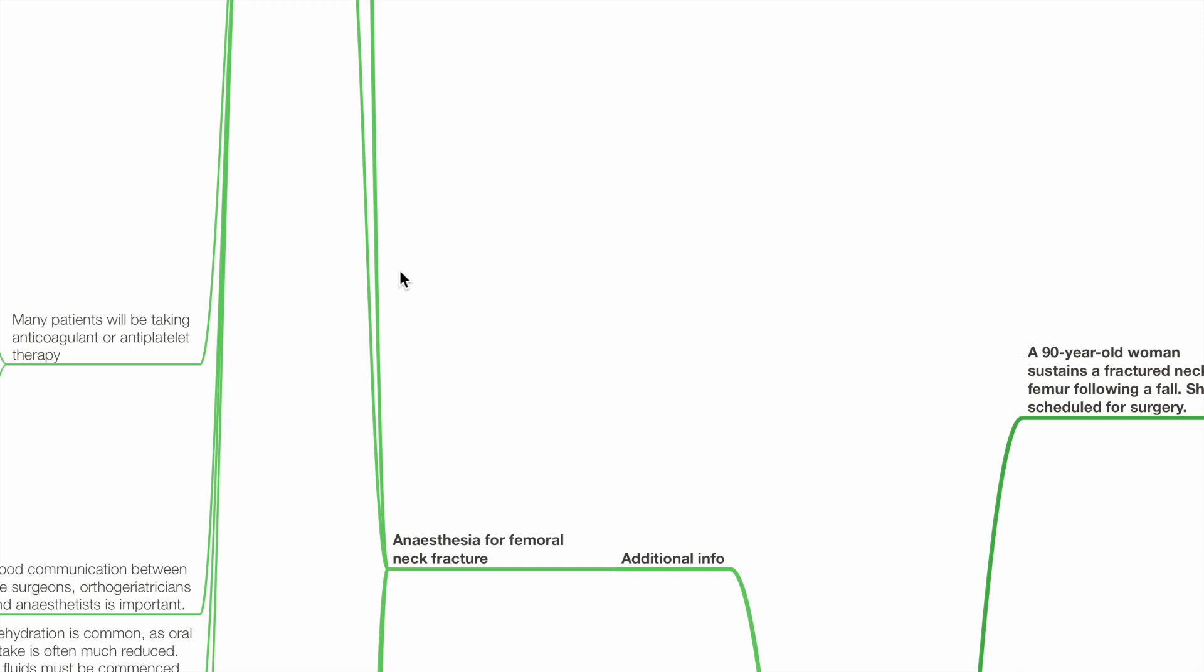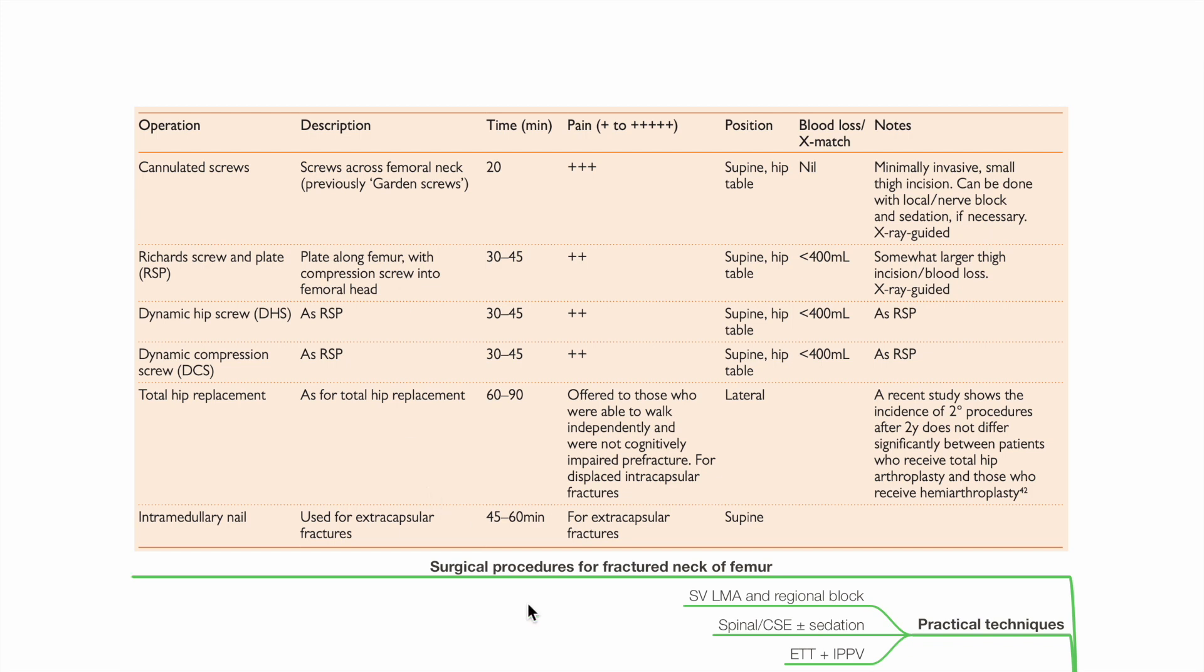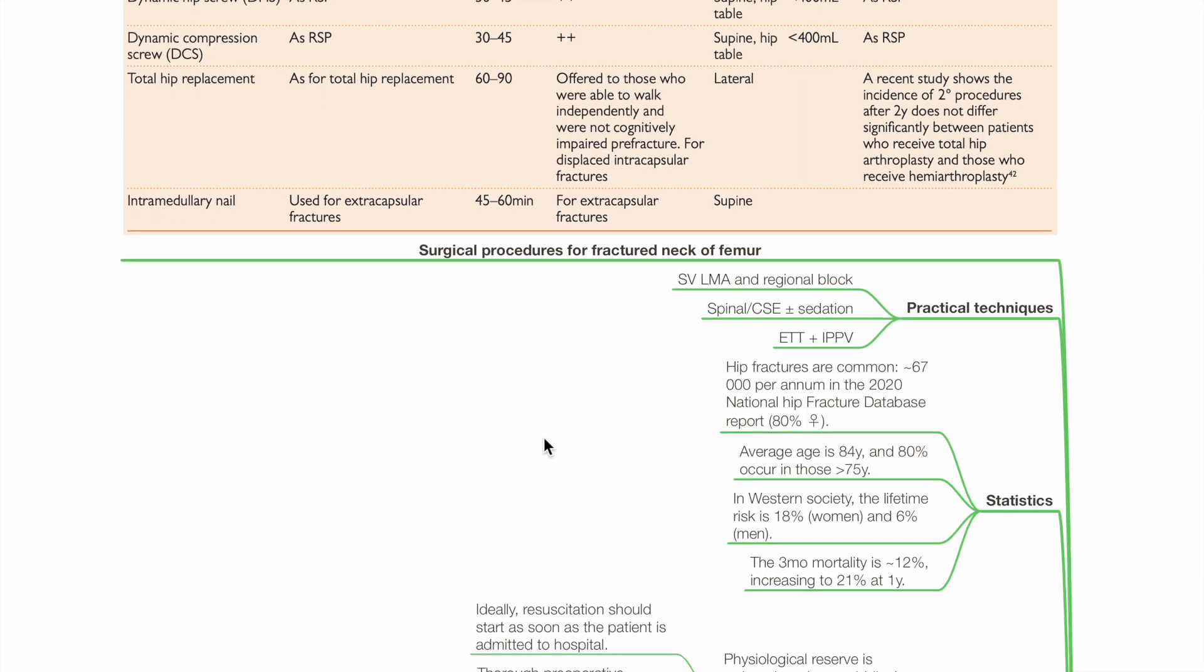Additional information. Anesthesia for femoral neck fracture. Surgical procedures for fractured neck of femur may involve cannulated screws, Richard's screw and plate, dynamic hip screw, dynamic compression screw, total hip replacement and intramedullary nail. With operation duration ranging from 20 to 90 minutes, pain from moderate to severe, position is supine for most procedures except for total hip replacement, which is in lateral position. Blood loss may range from nil to 1 liter. Practical techniques includes spontaneous ventilation with LMA and regional block, spinal or CSE with or without sedation, or general anesthesia with endotracheal tube intubation and IPPV.